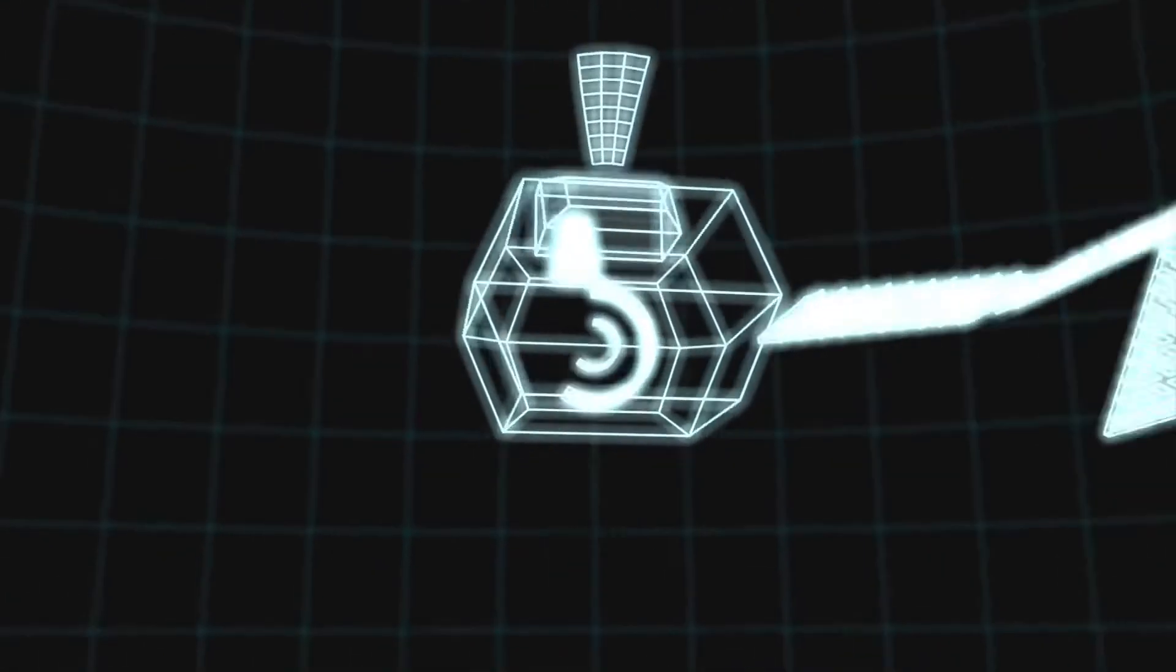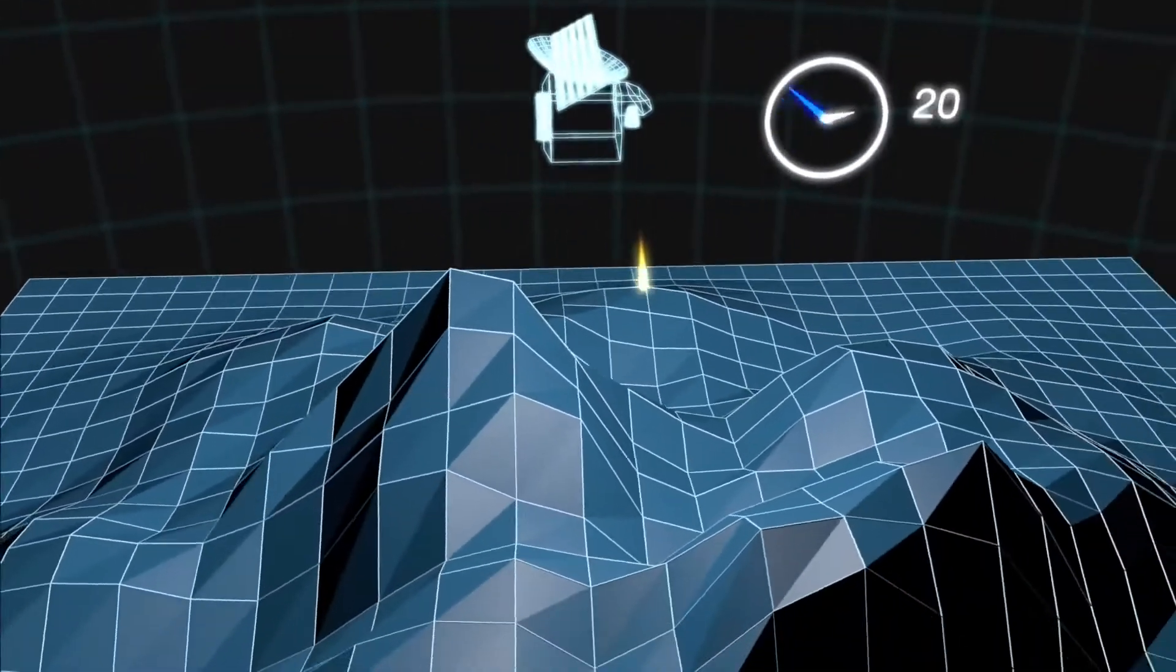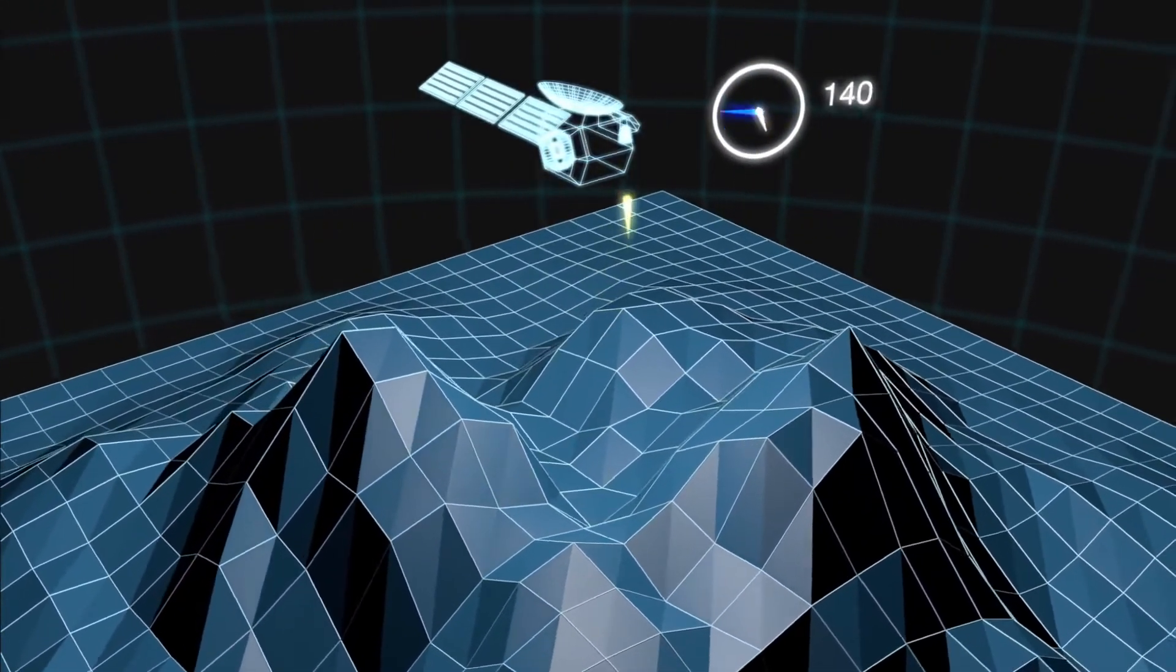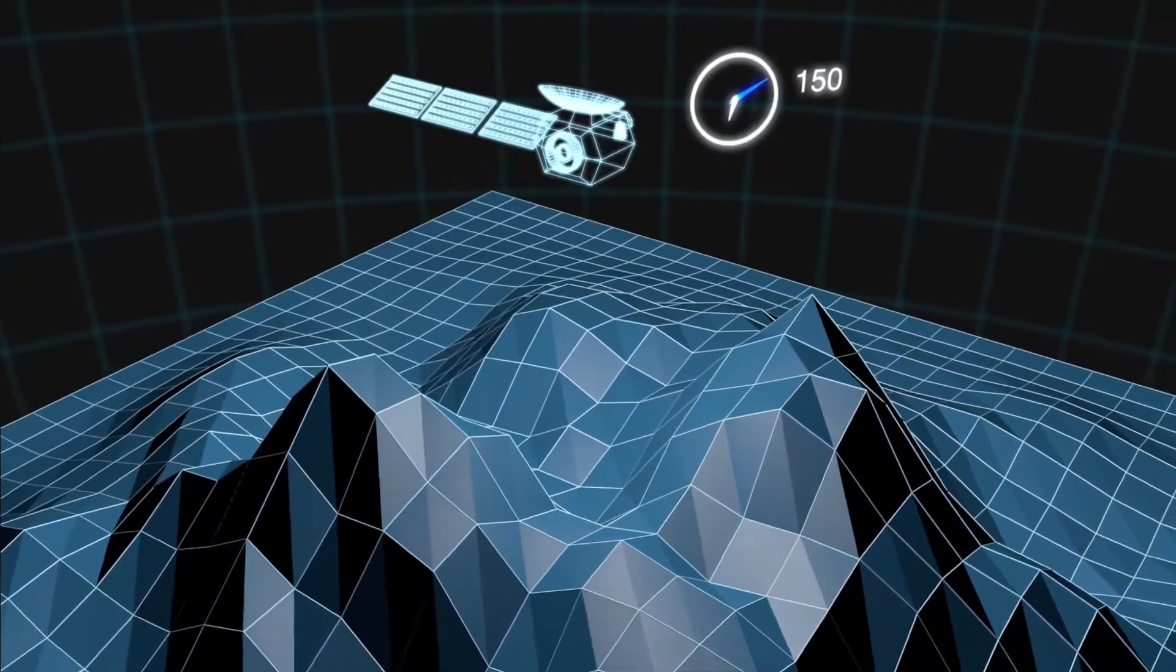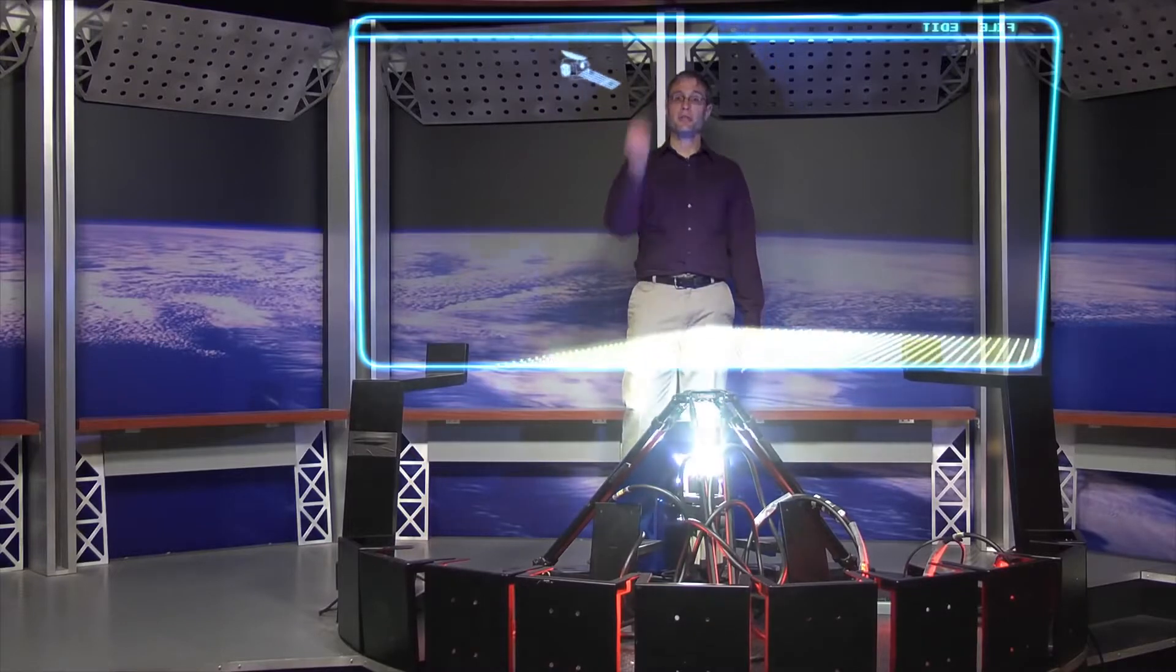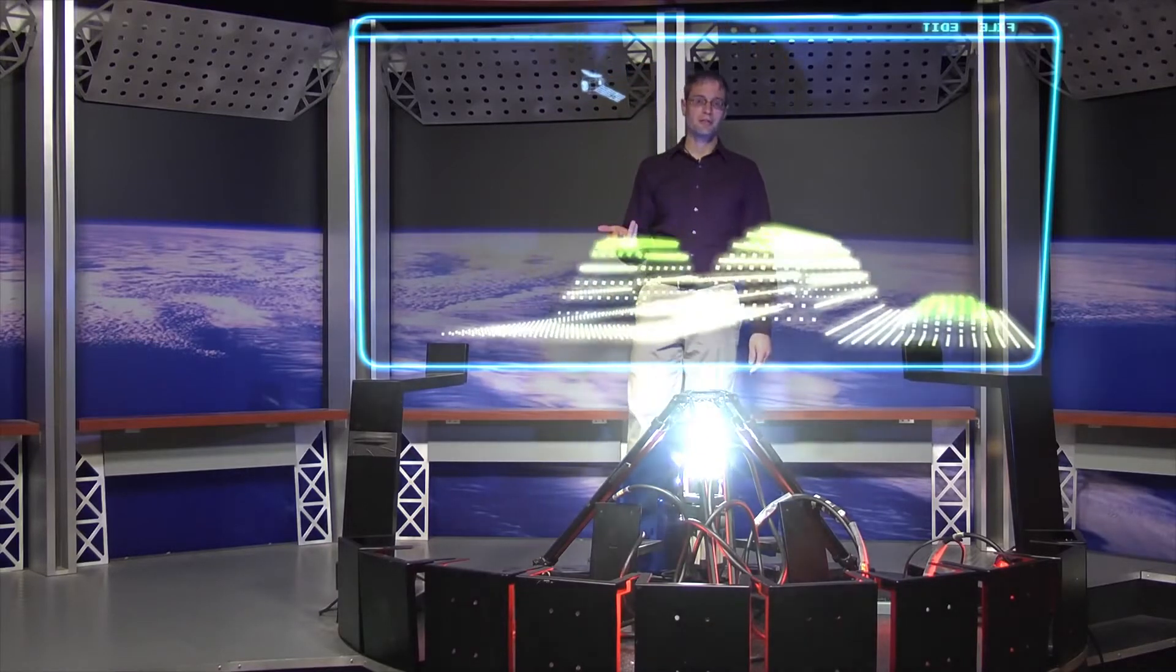To make these measurements, the LiDAR instrument first sends a laser pulse down to the planet's surface. The pulse hits the ground and reflects back to the instrument, where an onboard counter measures the time it took the pulse to make its trip. That gives a precise measurement of the distance between the instrument and the ground with respect to the planet's gravitational center.